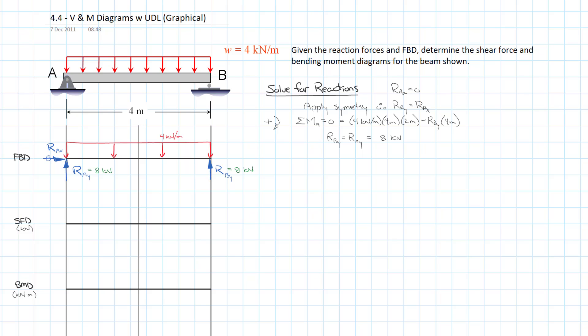As we discussed, an externally applied point load will cause a discontinuity in the shear force diagram with an immediate change equal to the magnitude of that force. Starting at point A going left to right, the first thing we have is the reaction force of 8 kilonewtons. That 8 kilonewtons is going to cause an increase in our shear force diagram equal to its magnitude, so I'm going to draw the line up to 8 kilonewtons.